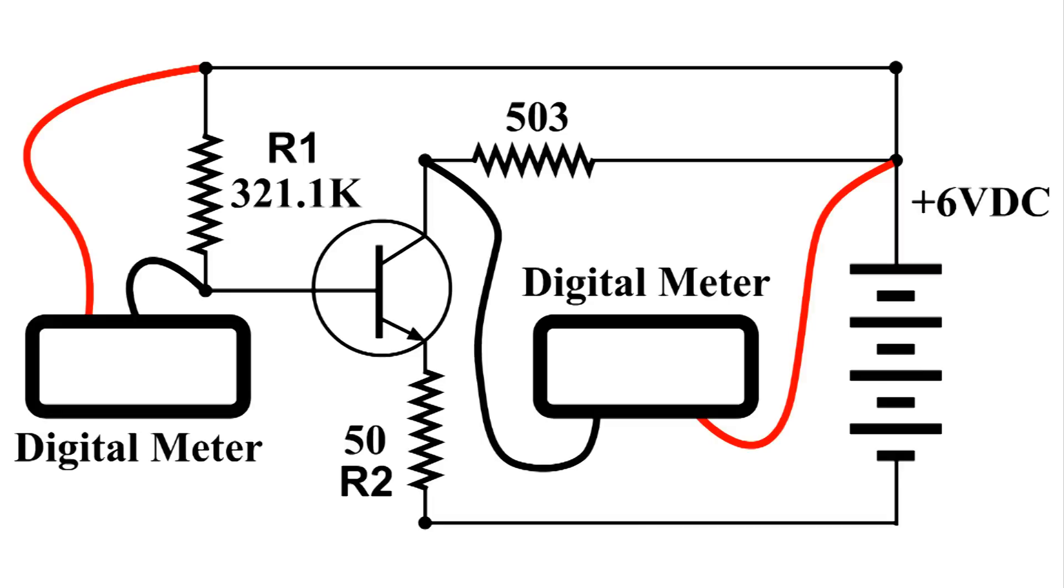Here is one NPN transistor. The voltage across the 503 ohm resistor is 0.587 and the voltage across R1 is 5.72 volts.